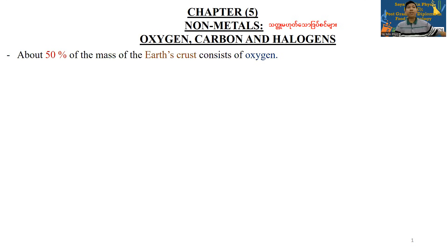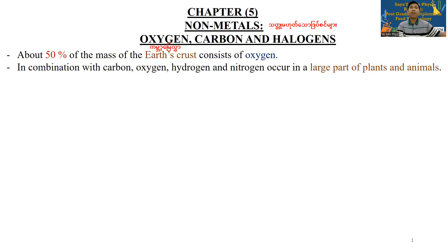About 50% of the mass of the Earth's crust consists of oxygen. In combination with carbon, hydrogen, oxygen, and nitrogen — carbonate, oxygen, hydrogen, nitrogen — these elements make up any large part of plants and animals.